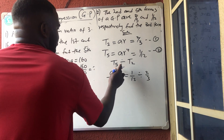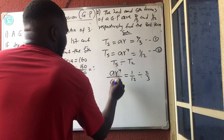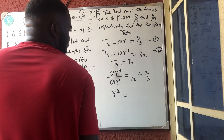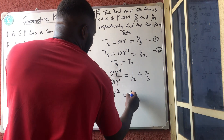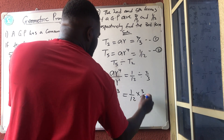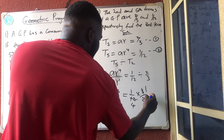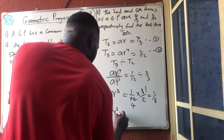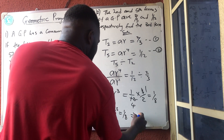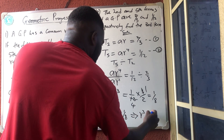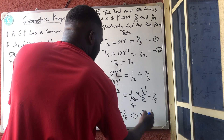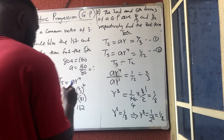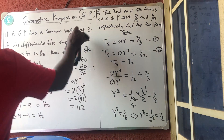So R^3 = 1/8. We can write this as R^3 = (1/2)^3, so R = 1/2. We've found the common ratio R = 1/2. Now to find the first term A, we use T2 = AR = 2/3, so A × (1/2) = 2/3, giving A/2 = 2/3. Cross-multiplying: 3A = 4, so A = 4/3.